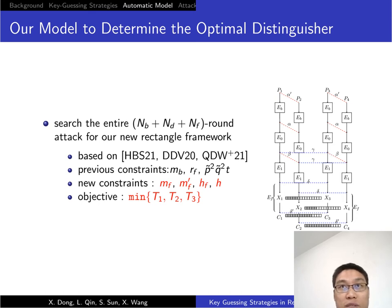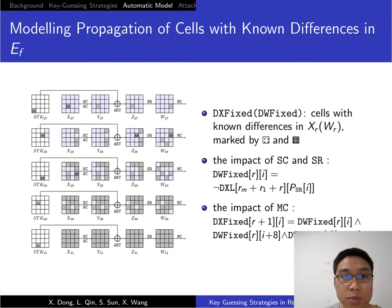We have to determine configurations for MB, MB point, MF, MF point, and H. The objective function is to minimize T1, T2, and T3. The first step is to model the propagation of cells with known differences in EF. We start from the end of the distinguisher and propagate from x27 to the end. We introduce some binary variables such as DXFix and DWFix to mark the known differences in xr or wr. The impact of SR and SC is determined by this equation, and the impact of MC is determined by this equation.